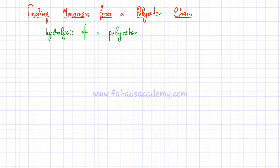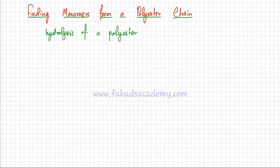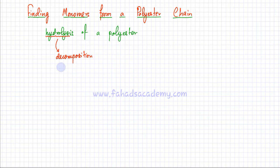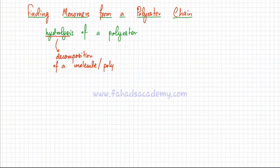In this lecture we're going to discuss the hydrolysis of a polyester and we're going to try and find the monomers if you're given a polyester chain. Hydrolysis literally means the breakdown or decomposition of a compound — specifically, the decomposition of a molecule, compound, or polymer by reaction with water.